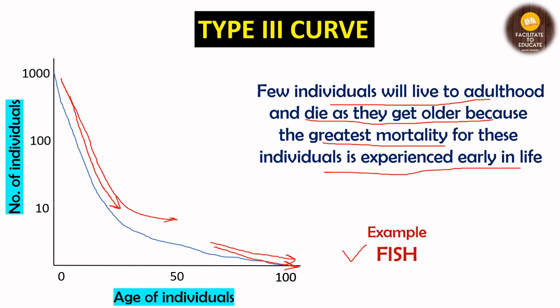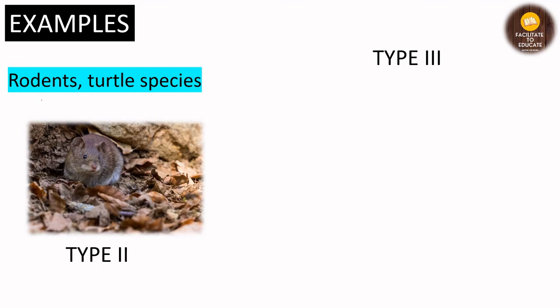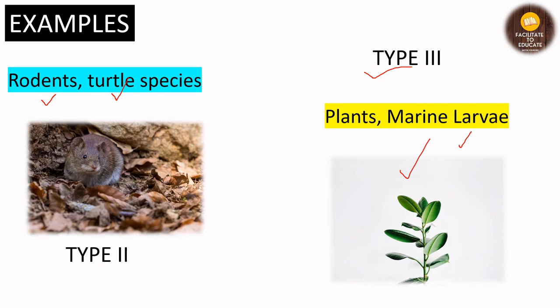Let's look at some more examples. For Type 2, rodents and some turtle species are also included, as they have high chances of dying at any stage with no fixed pattern — they can die accidentally or be killed at random. For Type 3, additional examples include plants and marine larvae. In the case of plants, there are many seeds but only a few grow into large trees or plants.